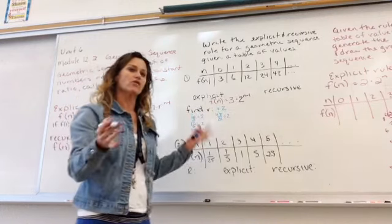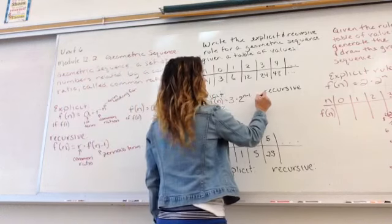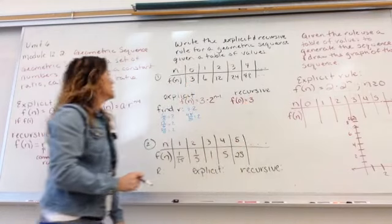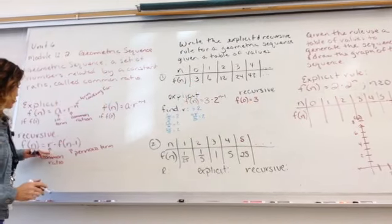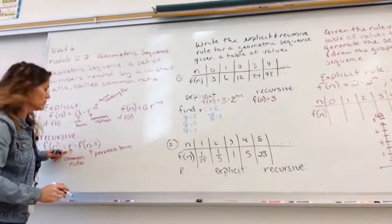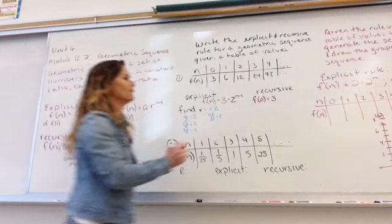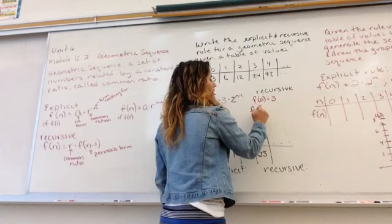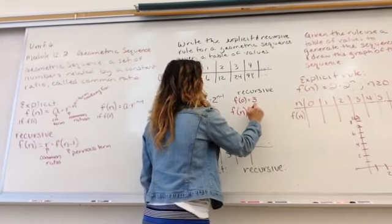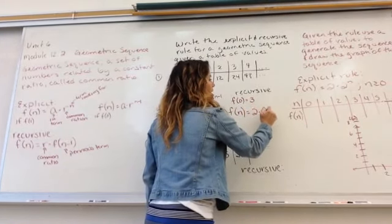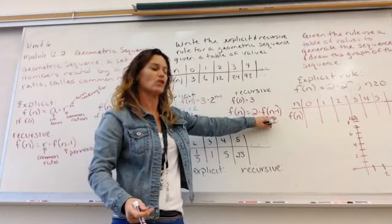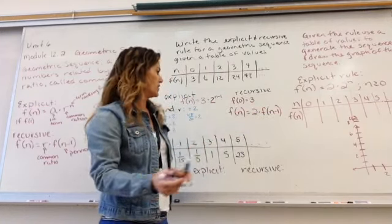So for recursive, just like with arithmetic, when we use the recursive, we need to state what the first term is. So we say f sub 0 is 3. And then we use our recursive formula that says take your common ratio and multiply it times f of n minus 1. So f sub n equals your common ratio of 2 times the previous term. And remember, this is just saying the previous term. There's our recursive.